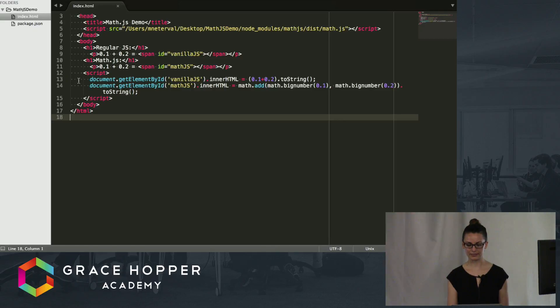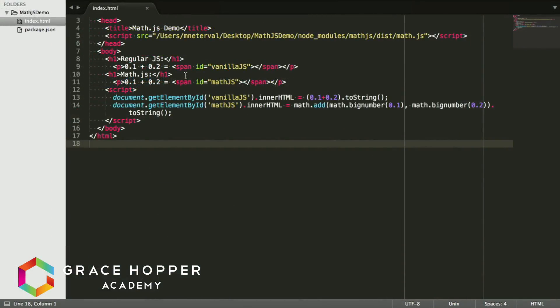So I wrote out a little script and because this can run in the browser as well as the server we're just going to do some quick math. So one tenth plus two tenths using vanilla JavaScript and then the same but using math.js's big number type.